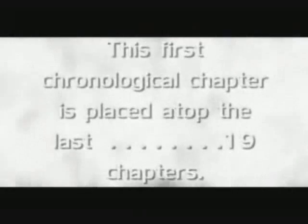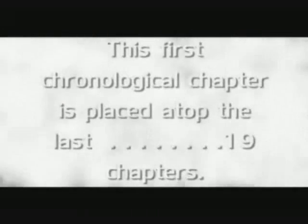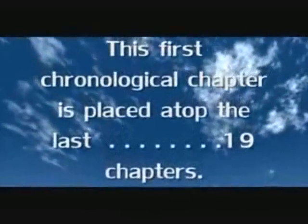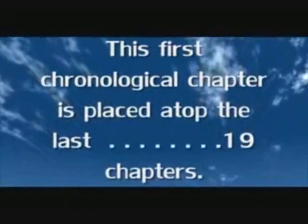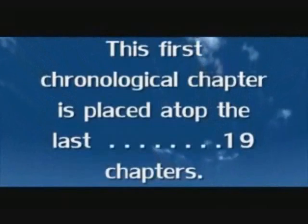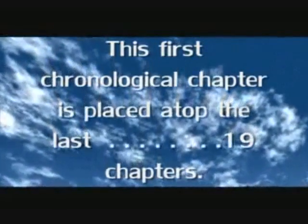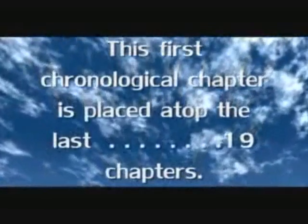The first chronological chapter is placed atop the last 19 chapters. Chapter 96, first in the chronological sequence, consists of 304 Arabic letters, and 304 equals 19 times 16.